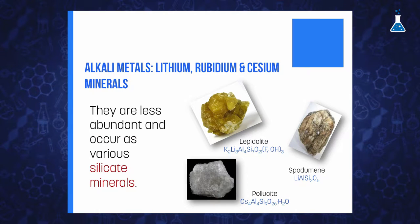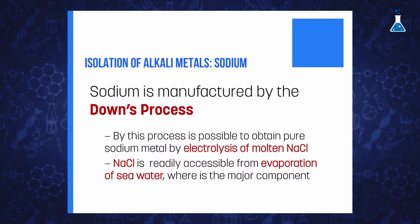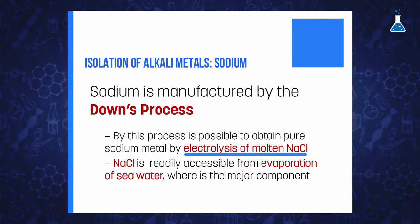Lithium, rubidium, and cesium are less abundant and occur as various silicate minerals. Sodium is the most cost-effective alkaline metal and is manufactured by the Downs process, which consists of electrolyzing sodium chloride in its molten state.